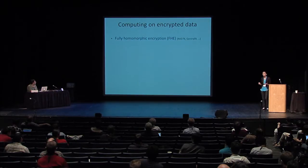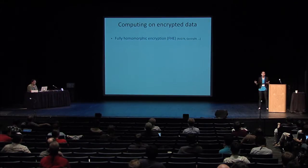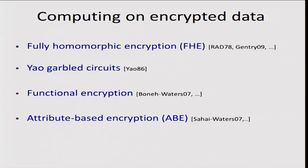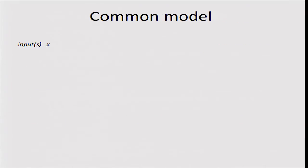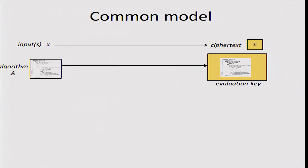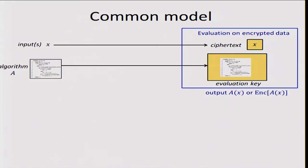Computing on encrypted data is an old and important notion in cryptography. We already have various primitives for this, including fully homomorphic encryption (FHE), Yao garbled circuits, functional encryption, and attribute-based encryption. These all share the following abstract model: an input X gets encrypted into a ciphertext, an algorithm A gets converted into a cryptographic evaluation key, and one uses the evaluation key to perform evaluation over the encrypted input X and obtain A of X, encrypted or unencrypted.